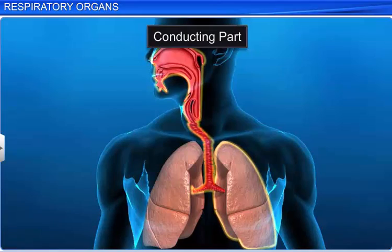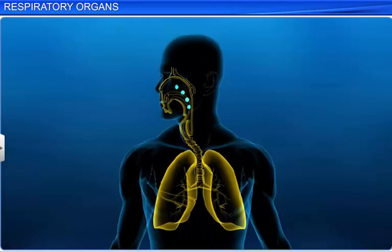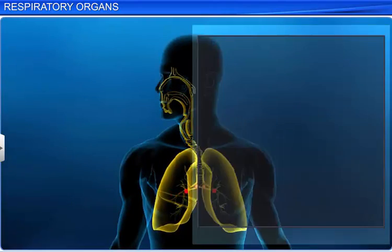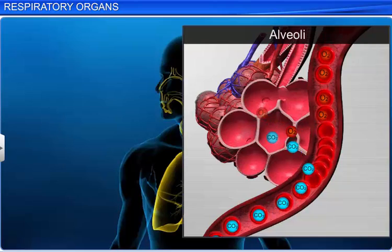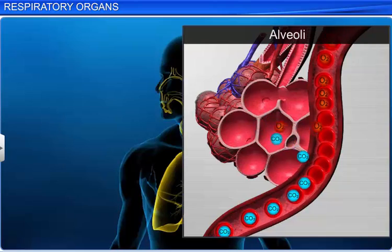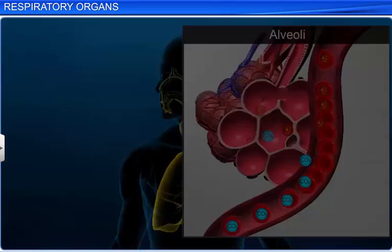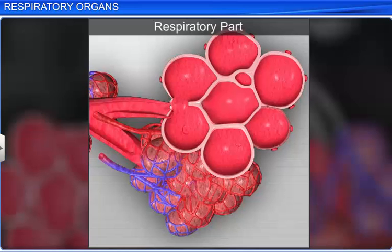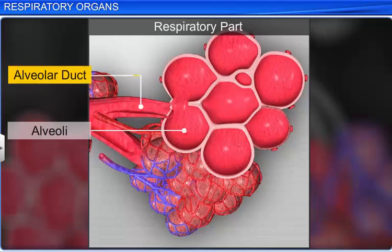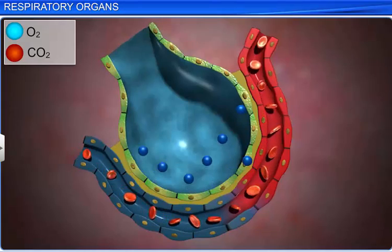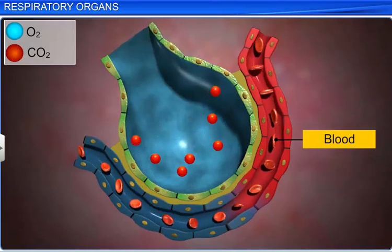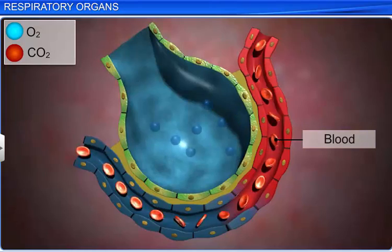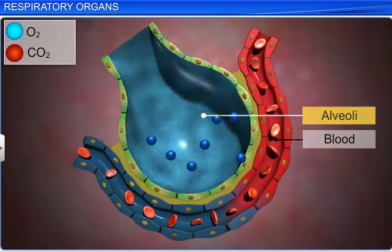The conducting part spreads from the external nostrils to the terminal bronchioles. It transports atmospheric air to the alveoli, clears it of foreign particles, and humidifies the air. The respiratory part contains the alveoli and the alveolar ducts. The actual diffusion of oxygen and carbon dioxide between blood and atmospheric air takes place in the alveoli of the respiratory part.